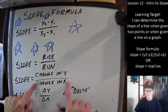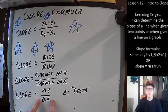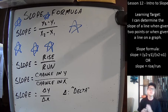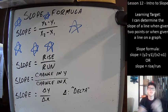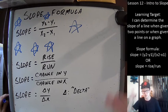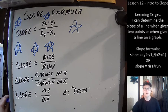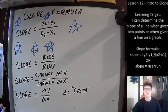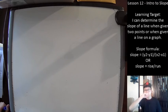All delta means, in the context of numbers and math, is 'change.' So delta y over delta x is identical to 'change in y over change in x' — just a shorter way to write it. Whenever you hear delta in general, it means change.